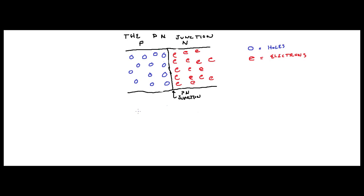So what's going to happen when we bring a P-type material and an N-type material together? That's what I've drawn here. The P-type material is represented on one side, with blue holes to represent holes. On the other side, we have red E's representing electrons, because an N-type material is going to have an extra electron in their lattice, and a P-type material is going to be missing one. Where they come together is called the P-N junction.